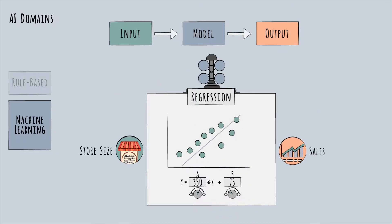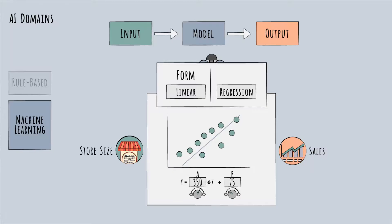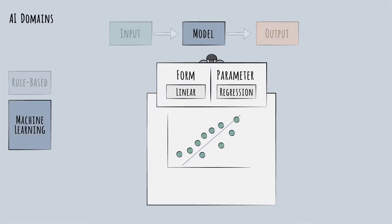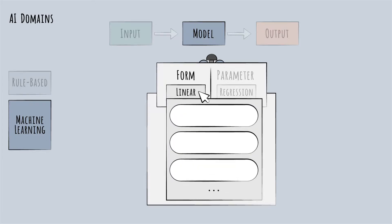In our store sales prediction example, we used a straight-line form and a regression to determine the optimal parameters. Many different mathematical forms can be used in the ML domain in a similar way. Say, a curve, a so-called tree, or even a neural network. Each form does the math in a different way, and the training approach will vary accordingly.